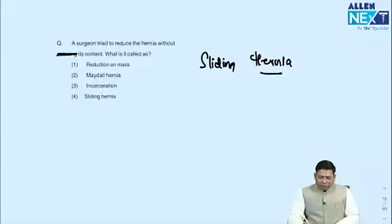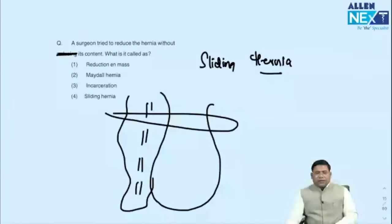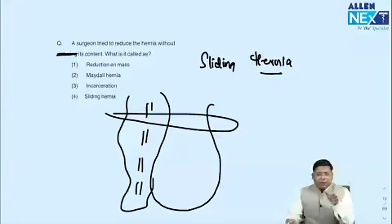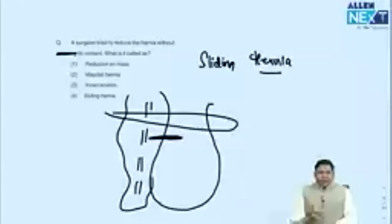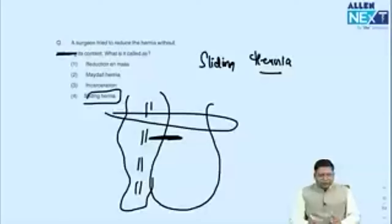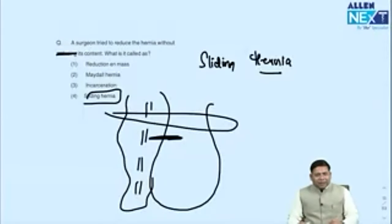A question on sliding hernia: post-reduction images showed that one wall of the sac was formed by a viscus. Sliding hernia is one where one wall of the sac is formed by a viscera — on the left side it may be sigmoid colon, or small intestine. The key clinical tip is that when you cut open the sac, you risk damaging that viscus. The question showed pre-reduction and post-reduction images with part of the bowel forming the sac.